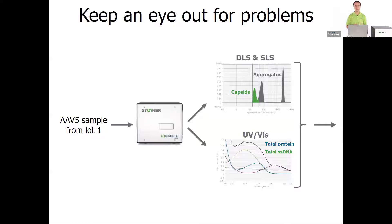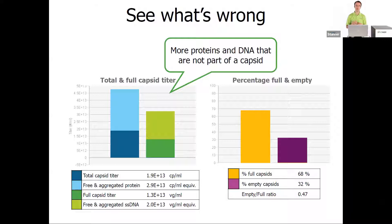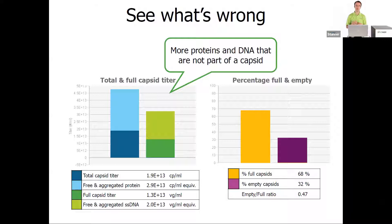Here we see an AAV5 sample from a first vendor lot, where, as is typical with AAV5 sometimes, we see a lot of aggregation. The capsid peak in green is noticeable but dwarfed by the amount of aggregates present. UV-Vis also tells us about sample quality — we see the green peak for DNA and the blue peak for protein, but Stunner also identifies a purple peak indicating some kind of impurity. When we analyze those pieces of data together, we can see far more protein and DNA that's not part of a capsid — large light blue and light green proportions indicating aggregation and a lot of free protein and free DNA.